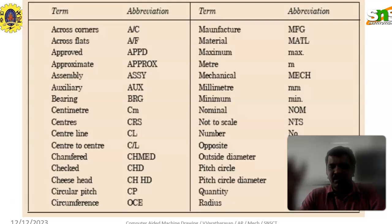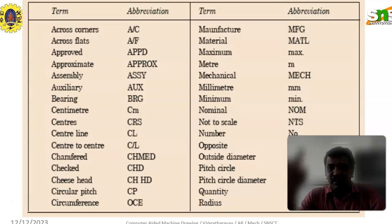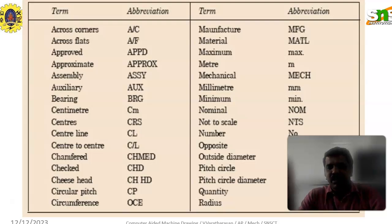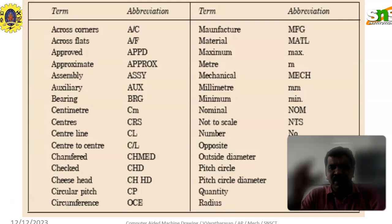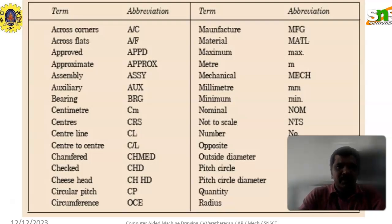In the title block, we are writing the registration number, the particular student's registration number, name, date — all these things will be in the title block. And also the scale factor value and the symbolic representation of the particular drawing, whether it will be first angle projection or third angle projection. The title block is the medium of representation of the particular diagram. Apart from the title block also, in the detailed view of the drawings, we are using these abbreviations. Based on the technical term, the abbreviation will be represented. We will see them one by one.